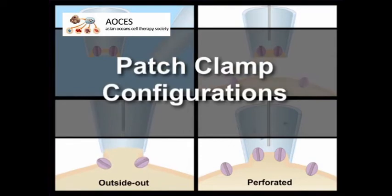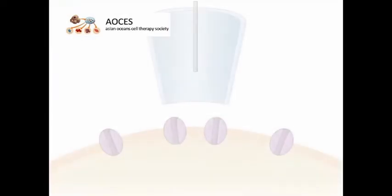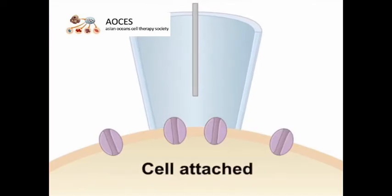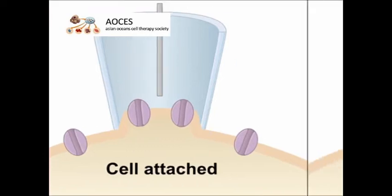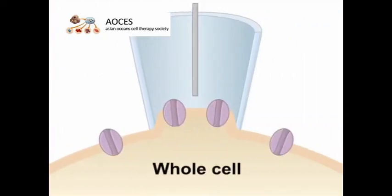Let's now look at the five main types of patch clamp configurations. First is the cell-attached configuration where the micropipet is simply sealed to the membrane of an intact cell. Second is the whole cell configuration where the membrane within the micropipet is ruptured to provide access to the cell's interior.